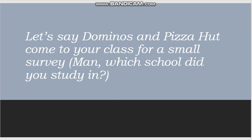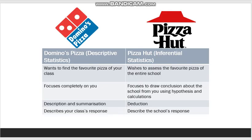To understand, let's say Domino's and Pizza Hut come to your class for a survey. Domino's just wants to find out the favorite pizza of your class — they wish to focus completely on you and have nothing to do with the rest of the school. They are focused on describing all the opinions of the kids and the summary of the same, and their results aim to define your class's response. On the other hand, Pizza Hut wishes to focus on the favorite pizza of the entire school, but they have come only to you and probably a few other classes in order to make their conclusion more accurate, so that you are now being used as a sample. They wish to draw conclusions about the entire school from your class and any other class they survey.